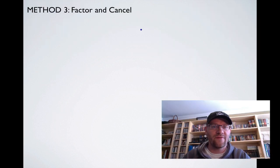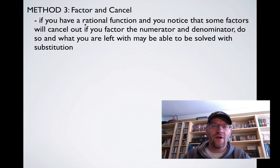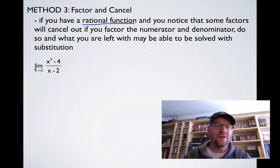Our third method is the factor and cancel method. If you have a rational function and you notice that some factors will cancel out if you factor both the numerator and the denominator, do so, and what you're left over with may be able to solve with substitution. So here's our example: the limit as x approaches 2 of x squared minus 4 divided by x minus 2. Right off the bat, if we were to substitute a 2 in, we're going to get a 0 in the denominator. We can't get that. So what we do is we factor the top and bottom.